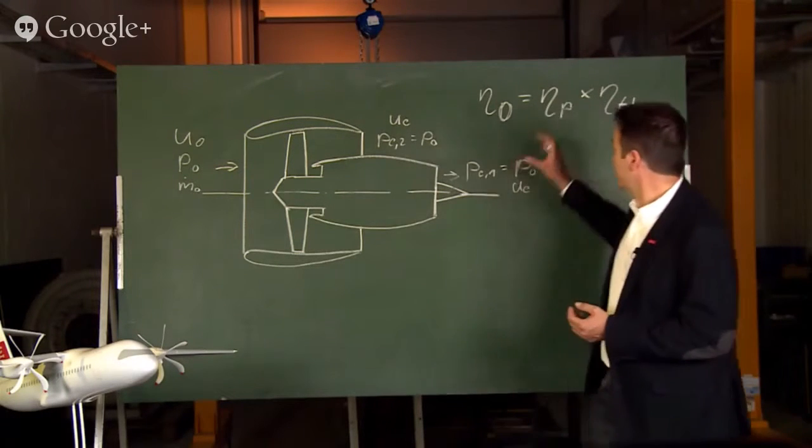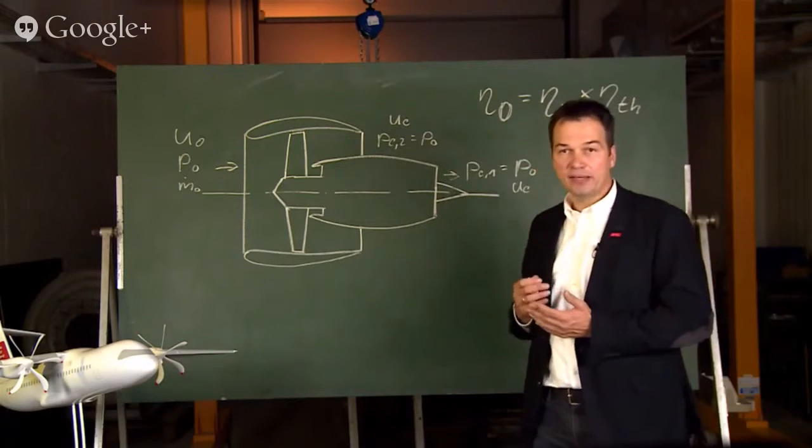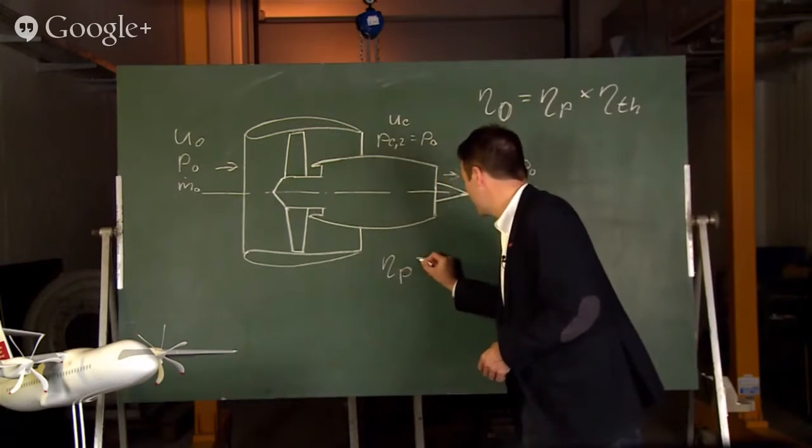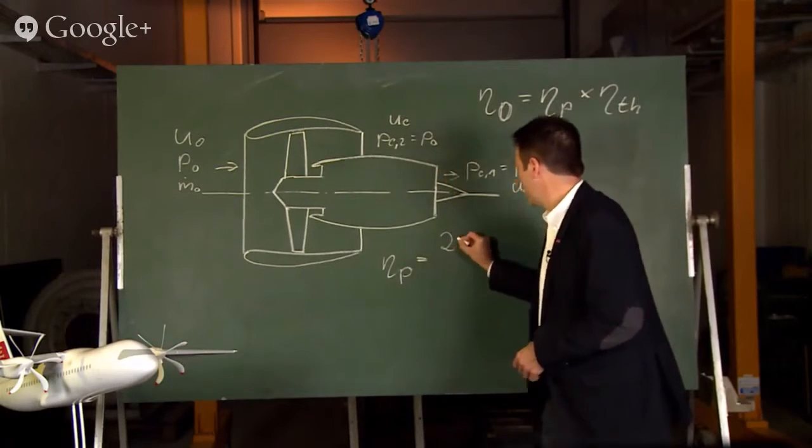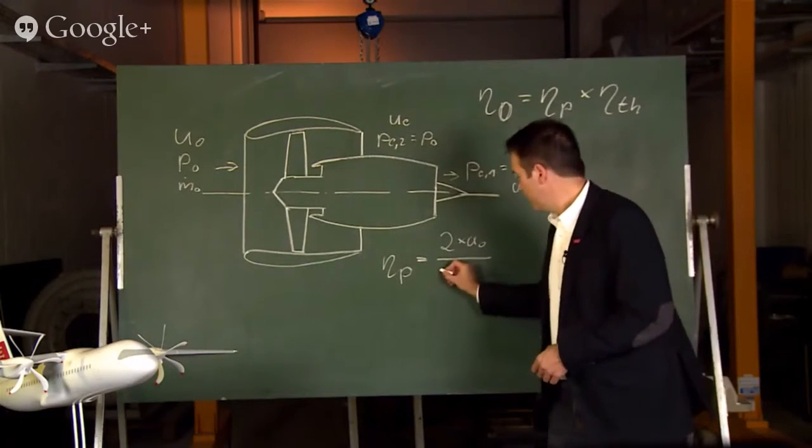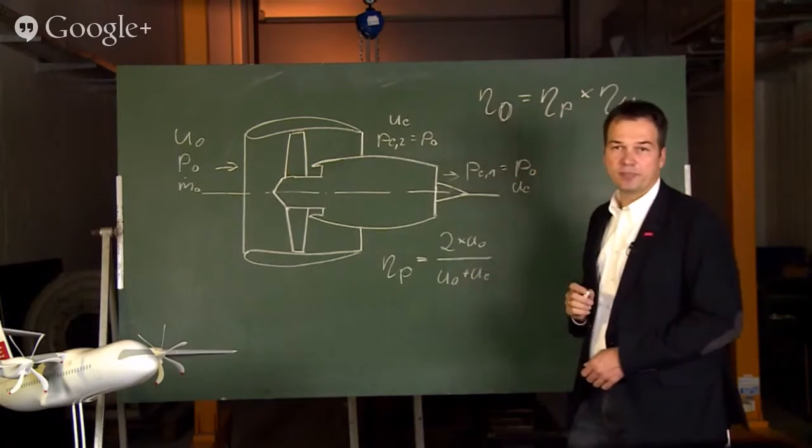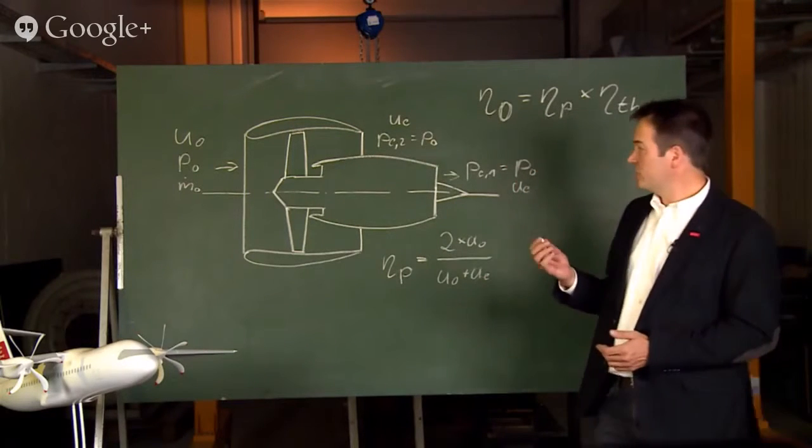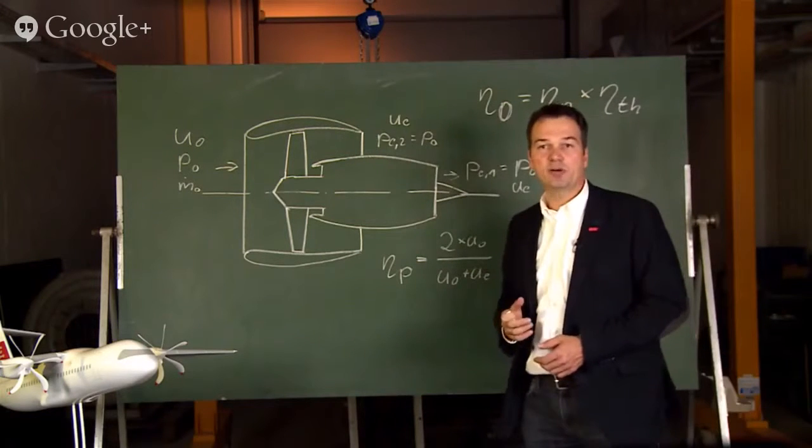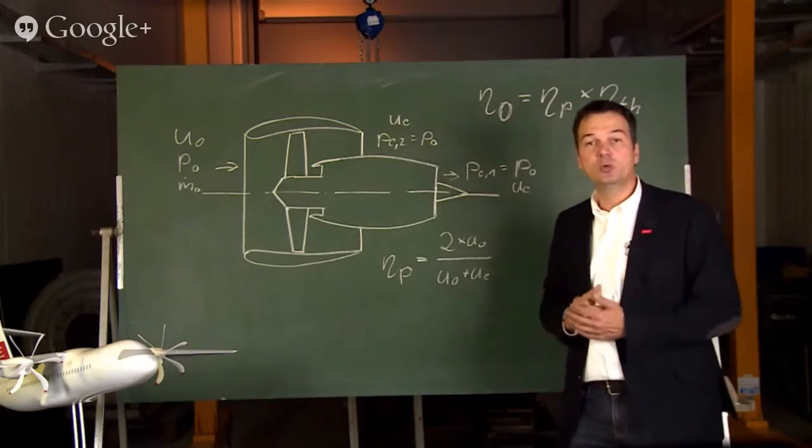Focusing on the propulsion efficiency here and making use of the assumptions we have made, these can be described as two times the flight speed divided by the sum out of flight speed and exhaust velocity. And here you can see that our assumption using the same exhaust velocities for primary and secondary mass flow allows to use just this one formulation here instead of having two speeds.